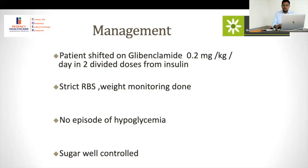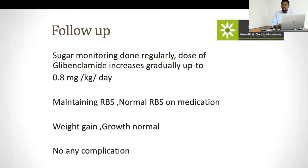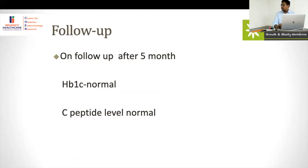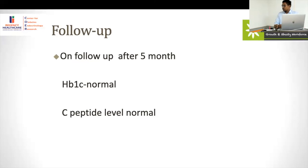With strict RBS and weight monitoring, no episodes of hypoglycemia occurred after switching to sulfonylurea; sugars were well controlled. Glibenclamide dose was gradually increased to 0.8 mg per kg per day, with normal RBS, normal weight gain, and growth. If the child's sugars normalize but there is no neurological improvement — muscle weakness, developmental delay — think of DEND syndrome from KIR gene mutation. Potassium channelopathy affects neurons and muscles; this child responded well, indicating it was not severe.